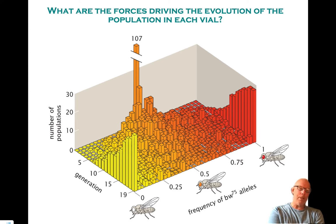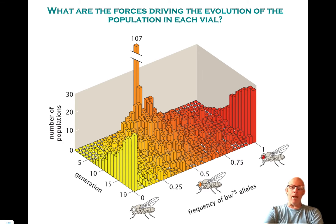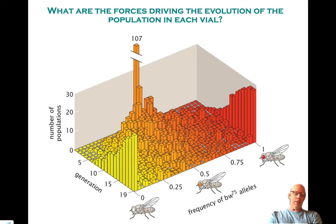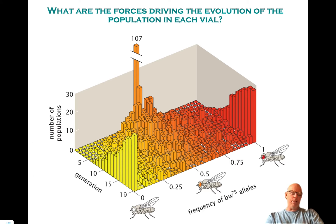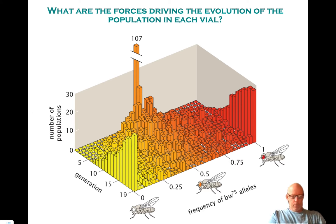When p is one, every single fly is red; when it's zero, every fly is white; and somewhere in between we have a heterogeneous population. The way we reckon little p, the frequency of BW75 alleles, is that we look at the number of reds and the number of oranges and use that rule. And maybe this is a good moment for me to shift over to my iPad.